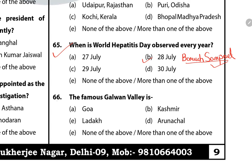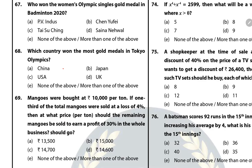Question 66: The famous Galwan Valley is in Ladakh — it is a place where there was conflict between Indian and Chinese soldiers. Question 67: Who won the Women's Olympic Singles Gold Medal in Badminton at the 2020 Olympics? The answer is Chen Yufei of China. She won gold; Tai Tzu-ying won silver, and India's P.V. Sindhu won the bronze medal.